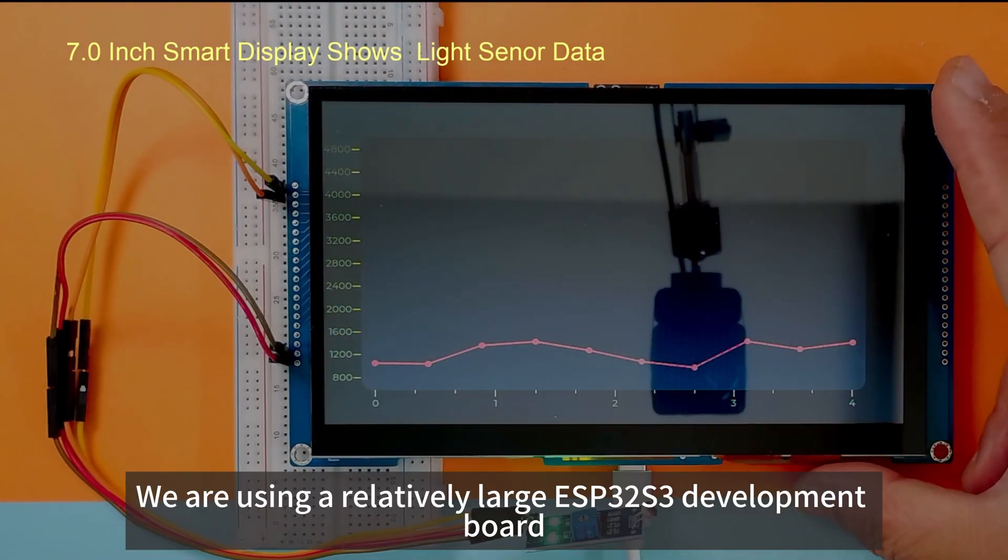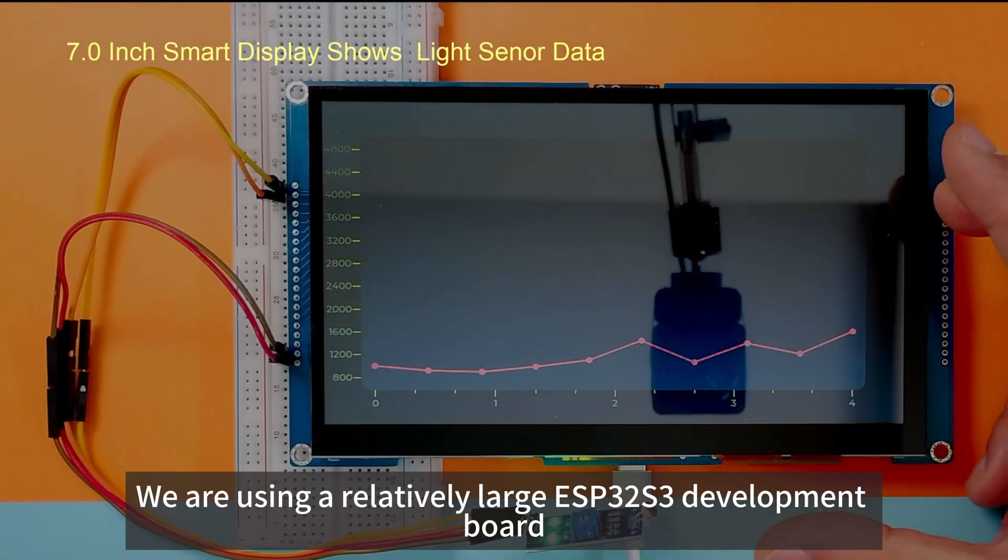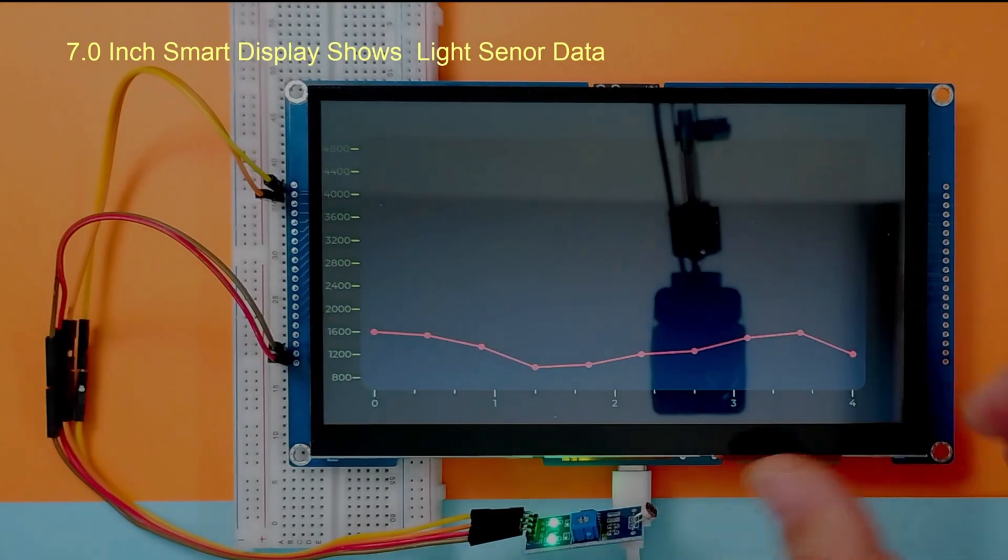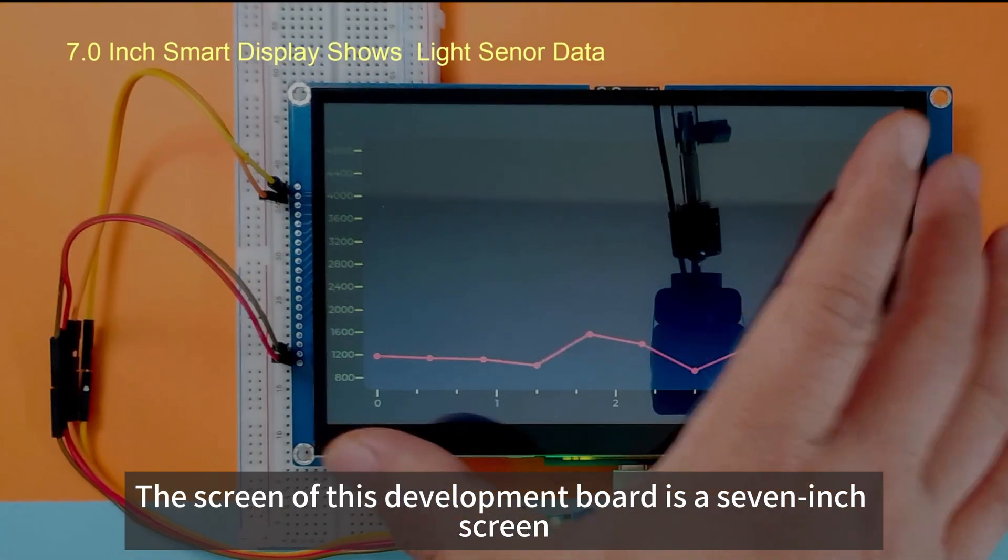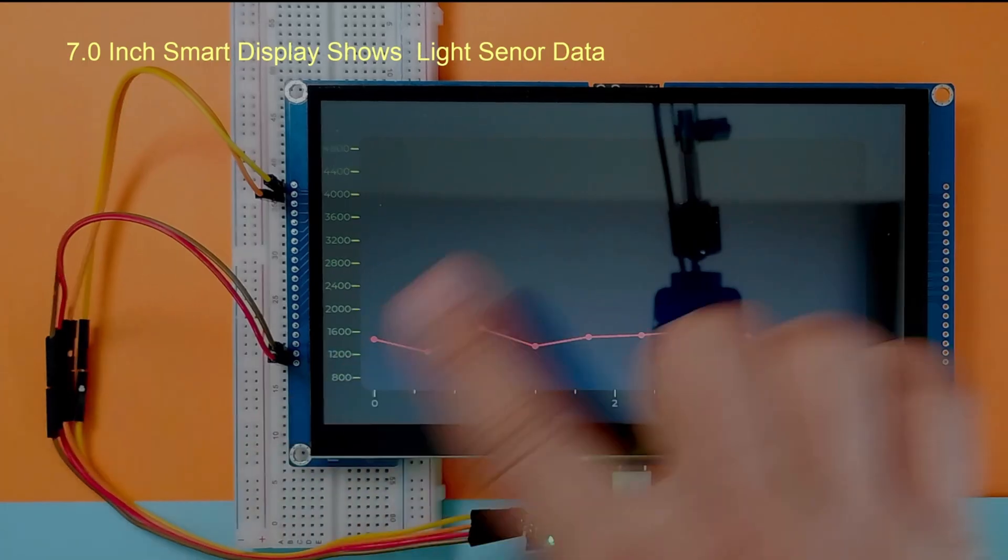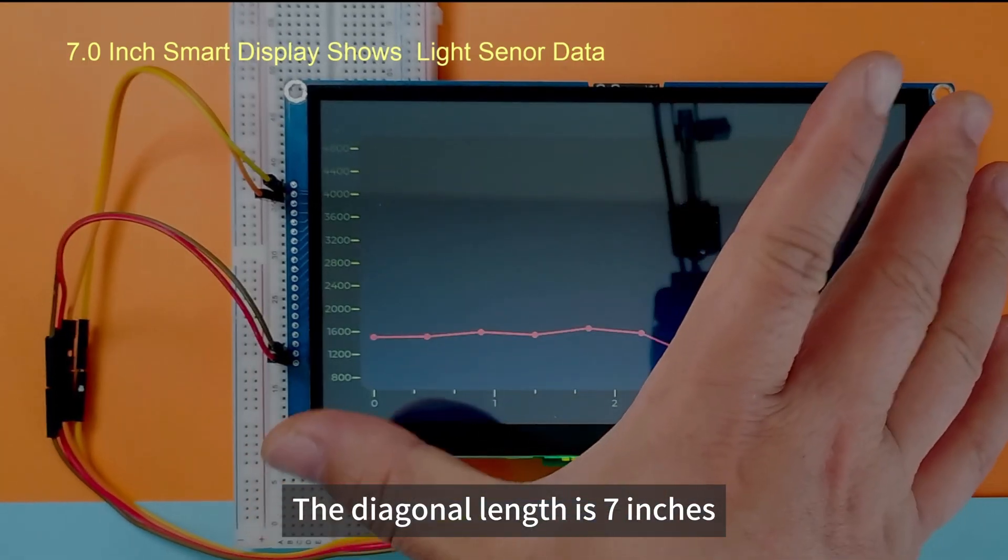We are using a relatively large ESP32-S3 development board. The screen of this development board is a 7-inch screen. The diagonal length is 7 inches.